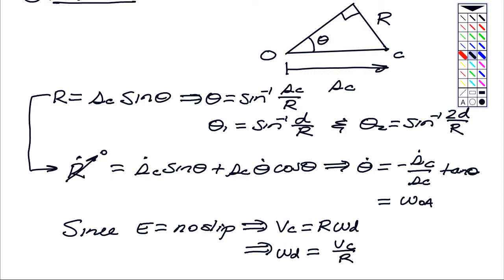And lastly, one thing that I should have said here is that Vc and SC dot are the same. That is, the speed of C is given by the time derivative of this distance SC. So I have an expression for omega D, I have an expression for omega OA, everything in terms of the speed of C. So we're in great shape to solve.